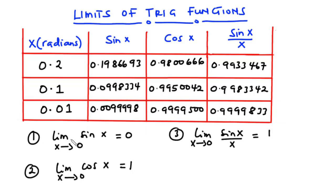The first equation is: the limit of sine x as x approaches 0 is equal to 0. The second: the limit of cos x as x approaches 0 is equal to 1. And the third: the limit of sine x over x as x approaches 0 is also equal to 1. We are going to use a table to validate these three equations, and you can confirm the values using your calculator — make sure it is in radian mode.